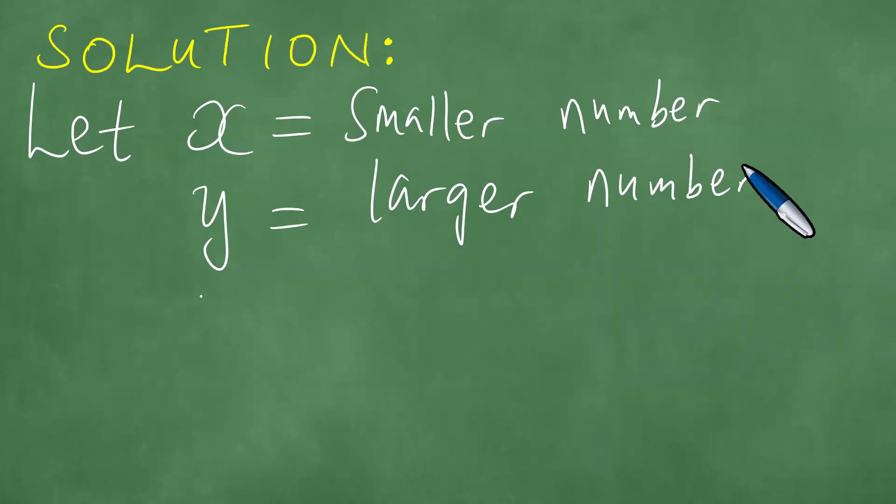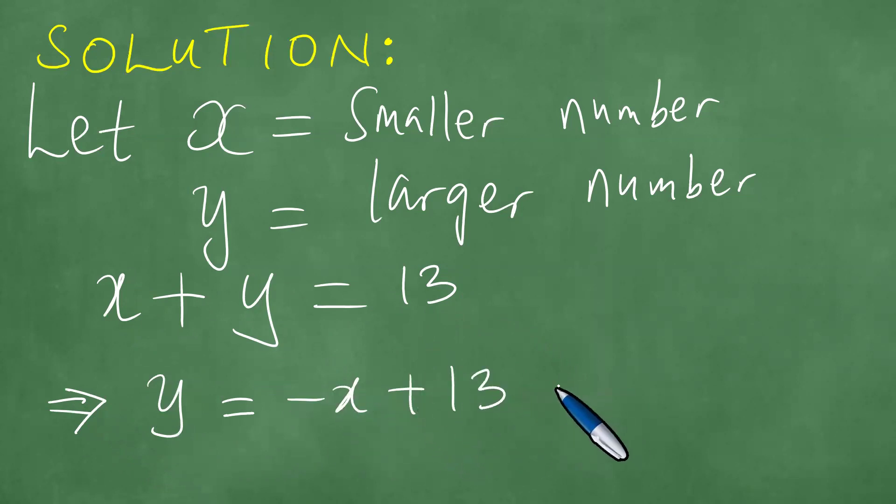Like so. We're able to see that the sum of these two numbers is 13 and this gives us one equation. This equation can be transformed and we can write this equation as y equals minus x plus 13. Let us call this equation one, the first equation.